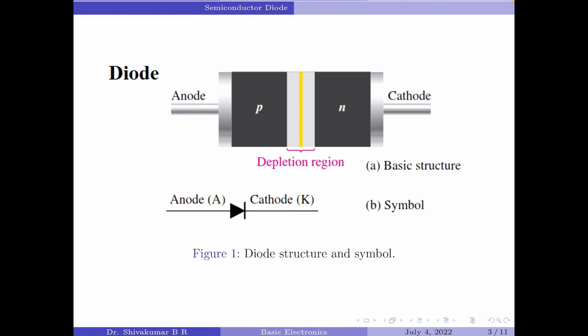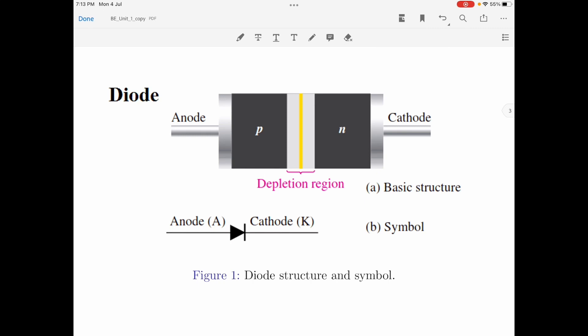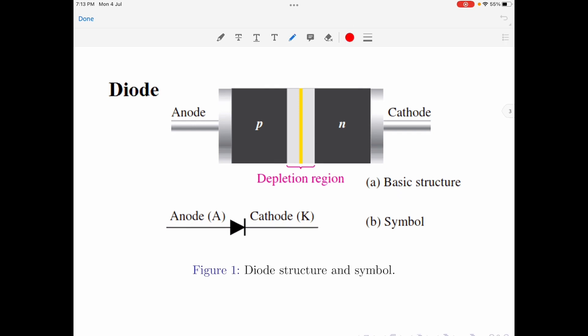I will be explaining this using the same diagram, which is Figure 1. When an n-type material is joined with a p-type material, as seen in Figure 1 part A, the electrons and holes in the vicinity of the region near the junction will combine. This results in the lack of free carriers, or depletion of free carriers, in this region — and hence this region is called the depletion region.